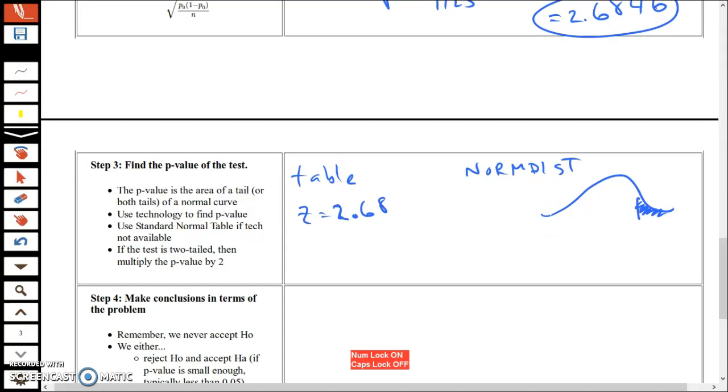However you get it, it's about 0.0037. 0.0037 is my p-value from the table.